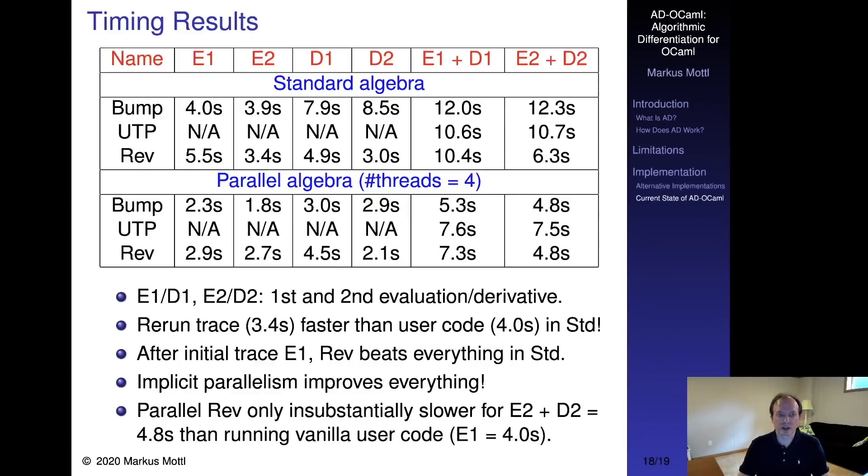Let's discuss the timing results. There are lies, damn lies, and then there are benchmarks. This is not a benchmark. It is a test suite for correctness, and as such not tuned to make AD-OCaml look fast. In fact, its deliberately narrow and deep computational graph only offers few opportunities for parallelism, which the parallel algebra is happy to exploit. The test suite is evaluated twice, on slightly different inputs, to show the impact of rerunning program traces.